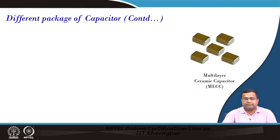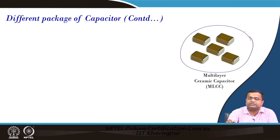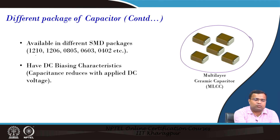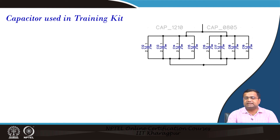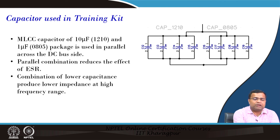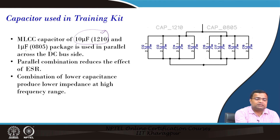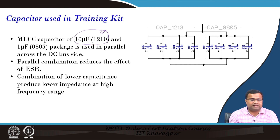Multi-layer ceramic capacitors are very much used in high frequency DC-DC converters. Available SMD packages include 1210, 12106, 0805, 0603, 0402, etc. We need to check the DC bias characteristics — capacitance reduces with applied DC voltage, so if you apply a large DC voltage the capacitance can reduce, and you have to take that into account. In this teaching kit, we have considered multiple capacitors in parallel on the input and output side: 10 microfarad multi-layer capacitor in 1210 package and 1 microfarad in 0805 package used in parallel. This parallel combination is used to reduce the ESR effect and to absorb high frequency noise.